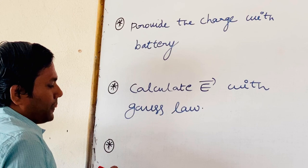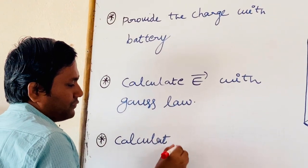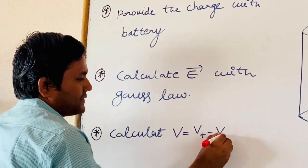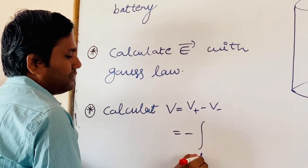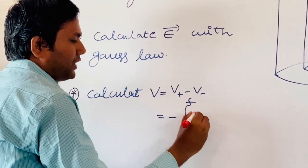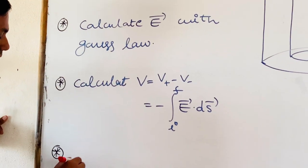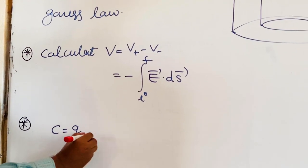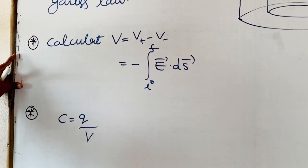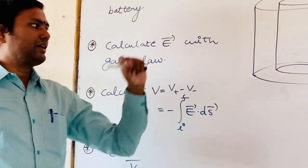Next, calculate V equal to V-plus minus V-minus, according to the equation: negative integral from i to f of E-bar dot ds-bar. The last step is to calculate the value of C with the help of this expression. These are the four steps we can use in order to calculate the capacitance of the cylindrical capacitor.